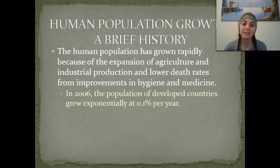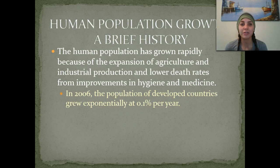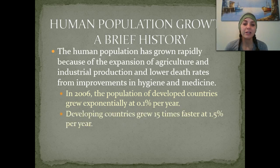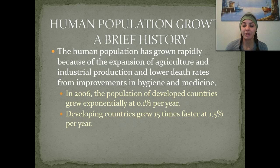In 2006, the population of developed countries — which means countries that are a little bit more stable, like the United States — grew exponentially at only 0.1% per year. However, developing countries grew 15 times that rate, at a rate of 1.5% per year.